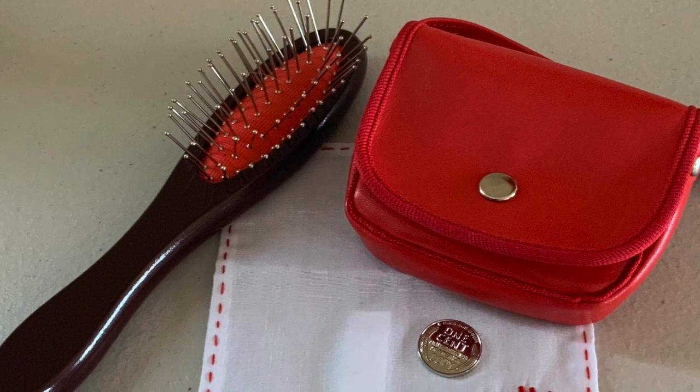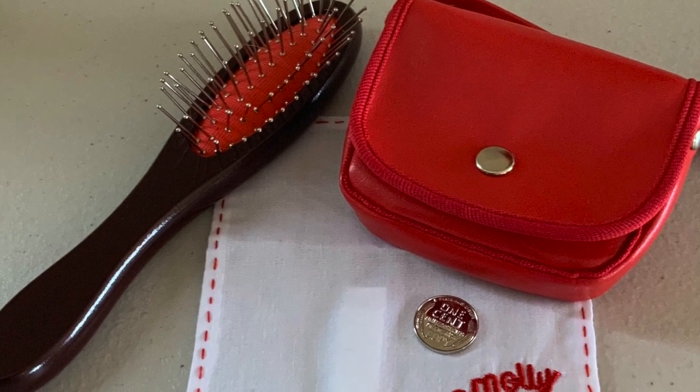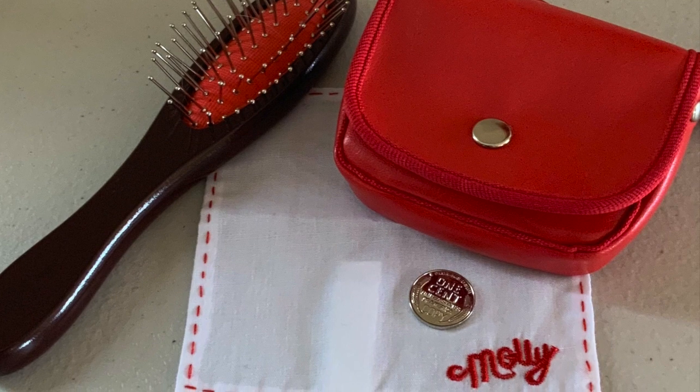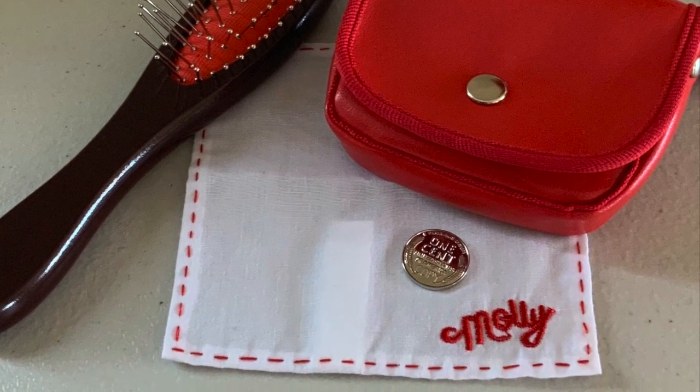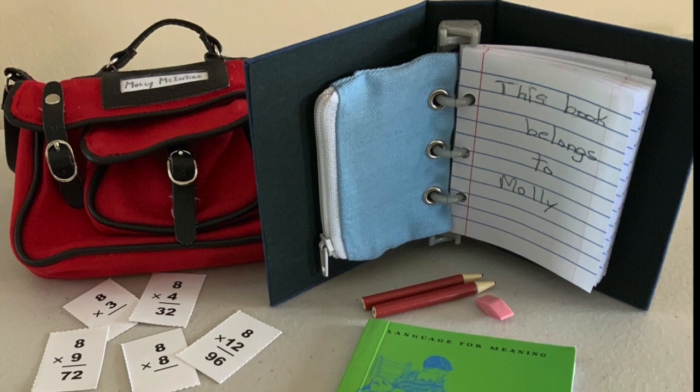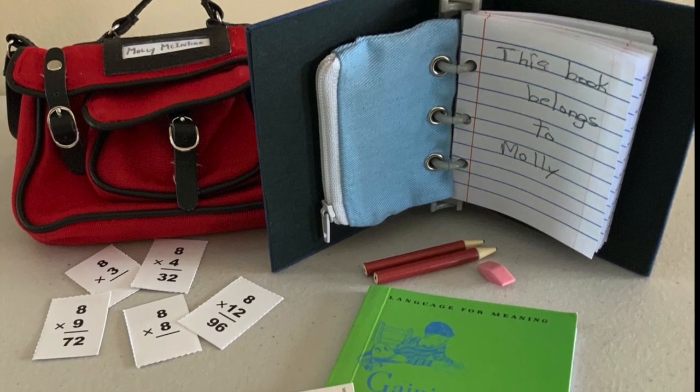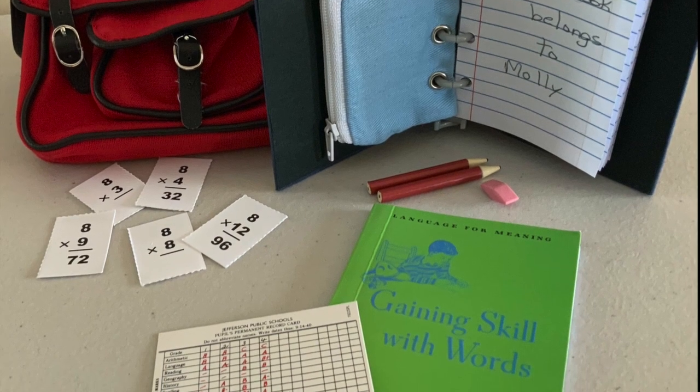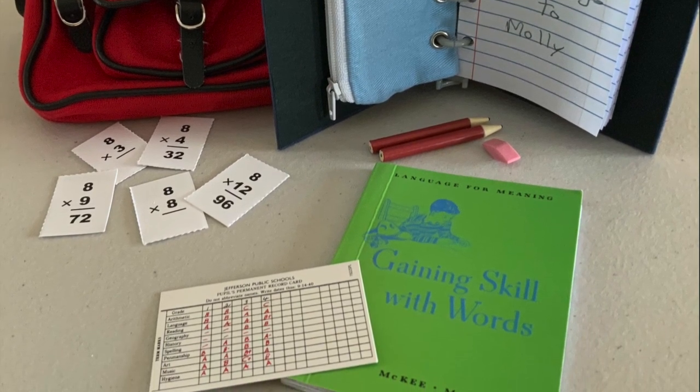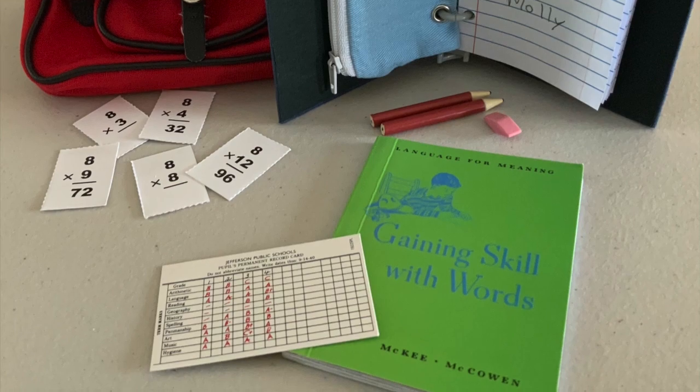Each item she owns has been scaled down proportionally to ensure that they look like miniature versions of the real items. She has a tiny hairbrush, handkerchief, and coin, as well as a Molly-sized book bag for school, complete with a binder, pencil case, and supplies. Her tiny report card indicates that math was not her strongest subject, but she's working hard on her math facts to improve.